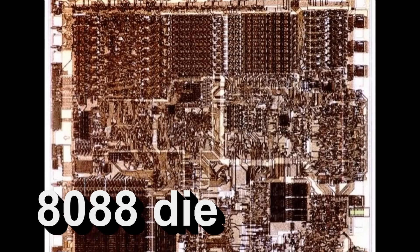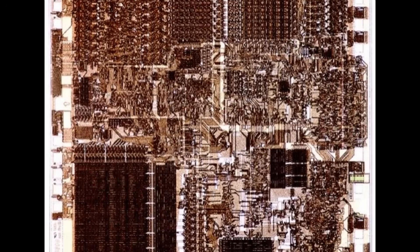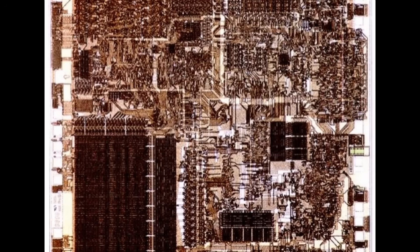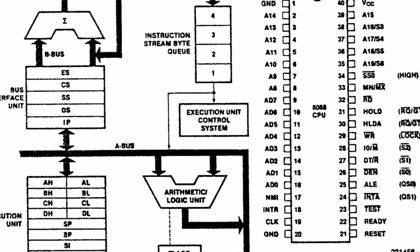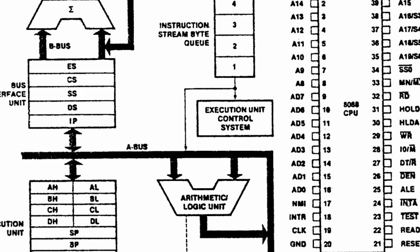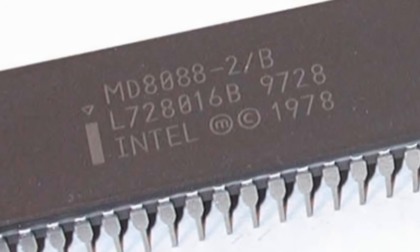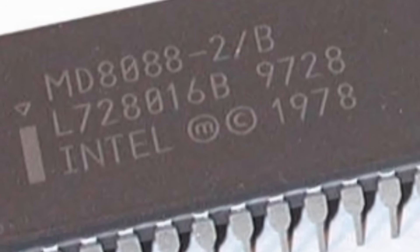So the people at Intel said to themselves, how can we offer the power of the 8086 and still keep the motherboard prices down? And so they built the 8088, a year after the 8086's release. Inside, the 8088 is identical to the 8086. The only difference is in the size of its front door — the path that the 8088 uses to transport data in and out of the chip. As it's only 8 bits wide, motherboard designers could easily adapt existing designs to the new chip. As a result, the 8088 enjoyed a moderate amount of success from 1979 to 1981.